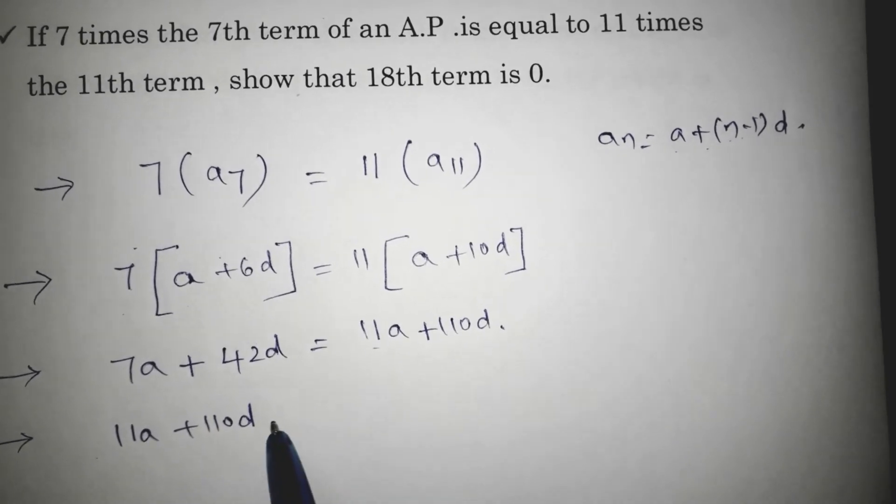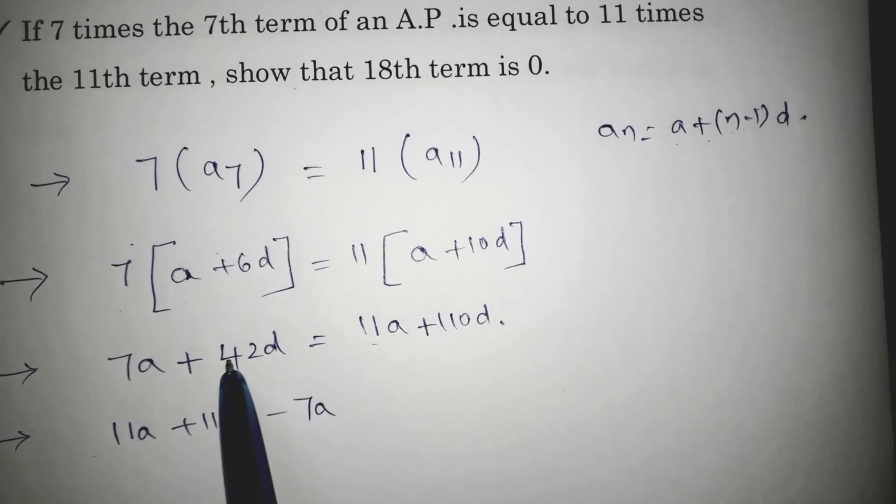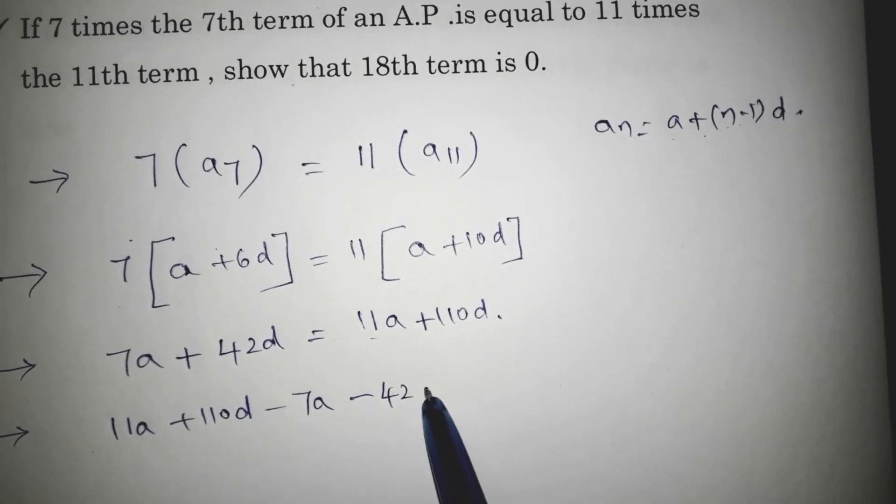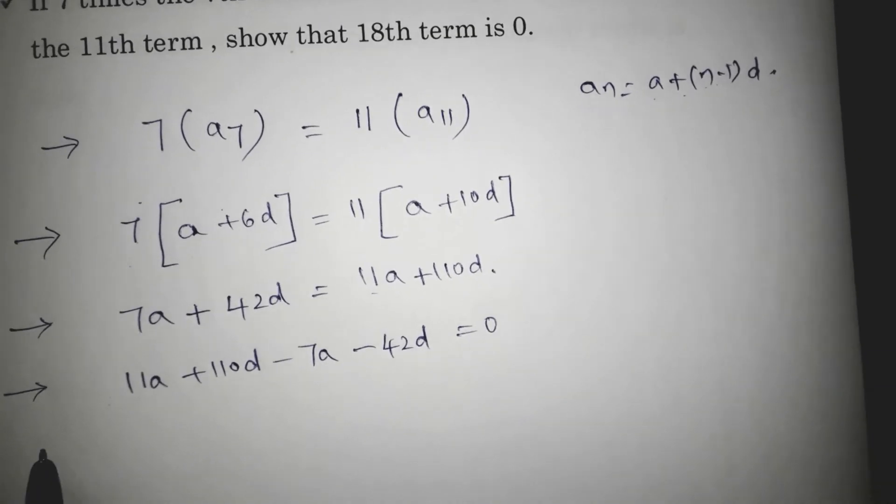If we take 7a to the other side, minus 7a plus 42 on transposing, it will become minus 42d equals 0.